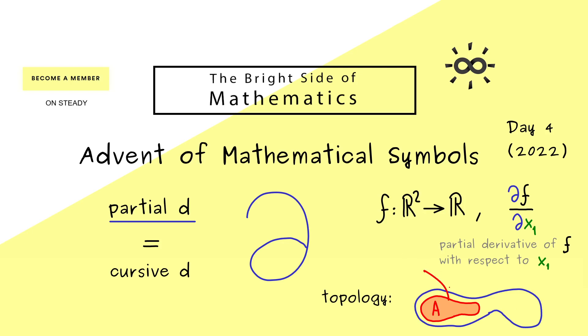In this picture here, we would visualize it as the shell of the given set A. And then we denote this boundary by partial d A. So you see, this is a completely different usage of this curve d than we have it for the partial derivatives.